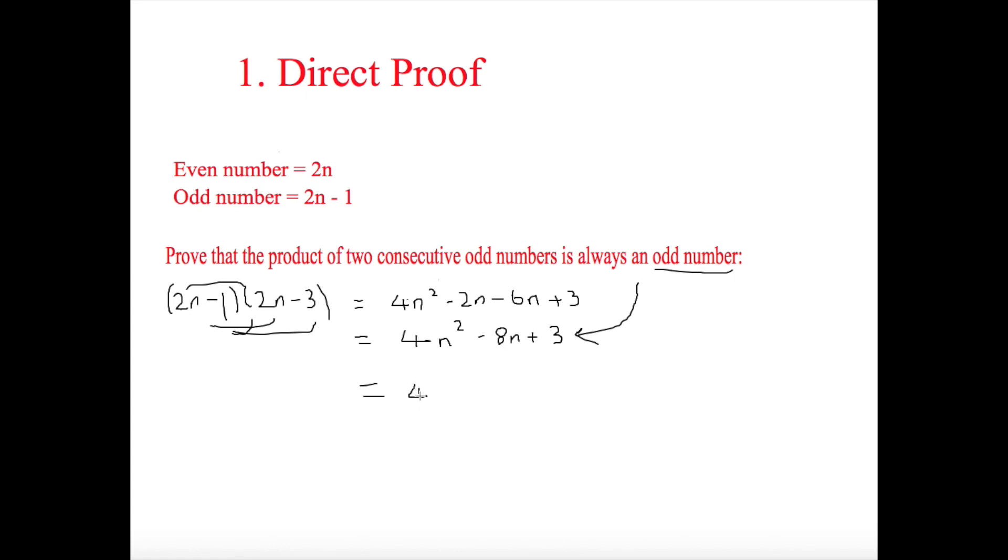So I'm going to take 4 out of it, and I'm going to put n squared minus 2n, and I can even make it clearer by taking 4n out and making that n minus 2n plus 3.